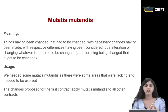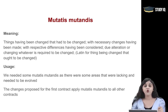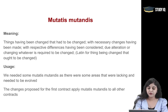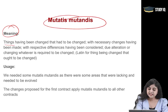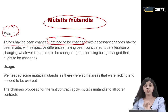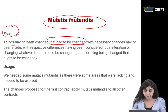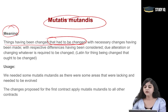Anything which wanted some sort of change, alteration, or modification — you can change that. That is called Mutatis Mutandis. This adverb's meaning: things having been changed that had to be changed. With necessary changes having been made, with respective differences having been considered.